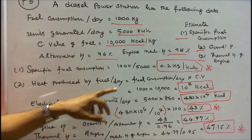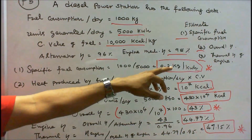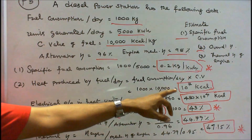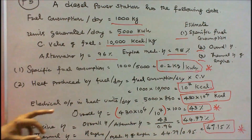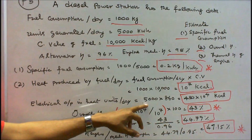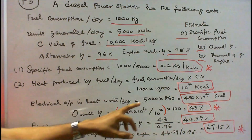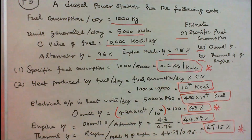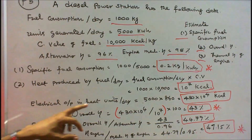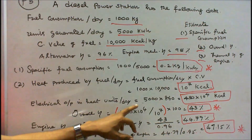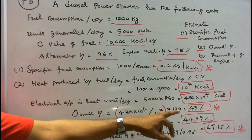Heat produced by fuel per day = fuel consumption × calorific value = 1000 × 10,000 = 10⁷ kilocalories. Electrical output in heat units per day = 5000 kilowatt-hours × 860 = 430 × 10⁴ kilocalories. Overall efficiency = electrical output in heat units per day ÷ heat produced by fuel per day = (430 × 10⁴) ÷ 10⁷ × 100 = 43%.